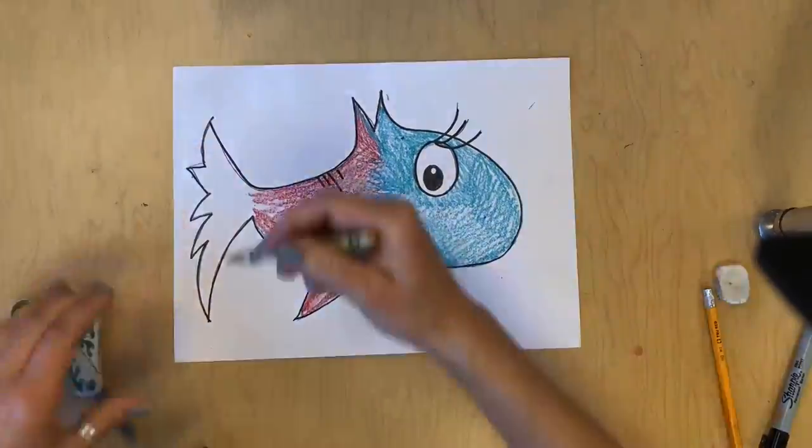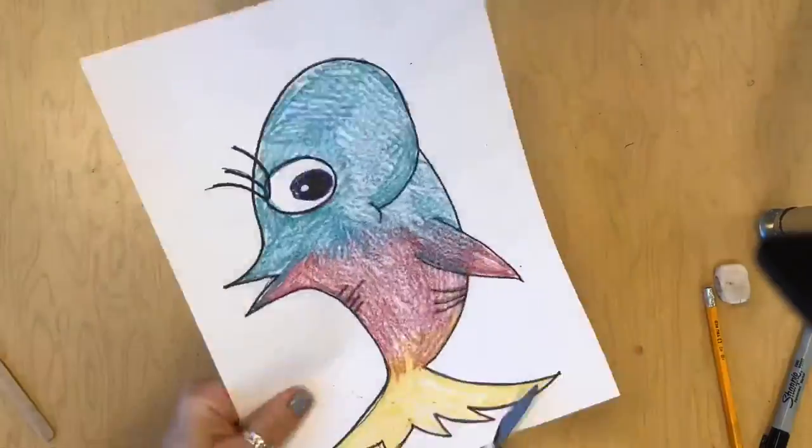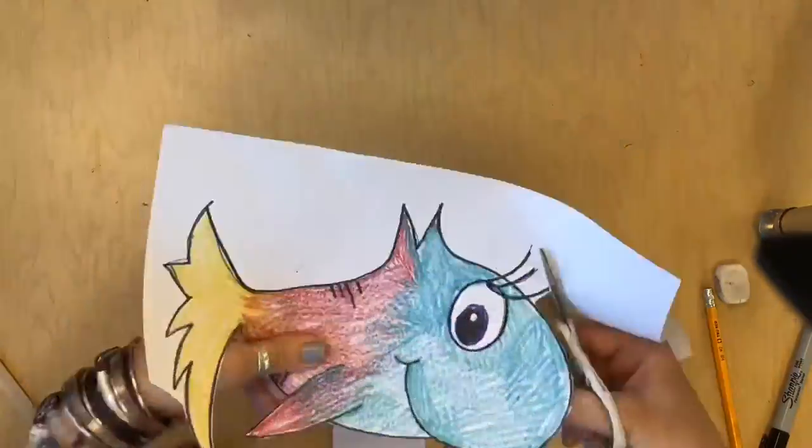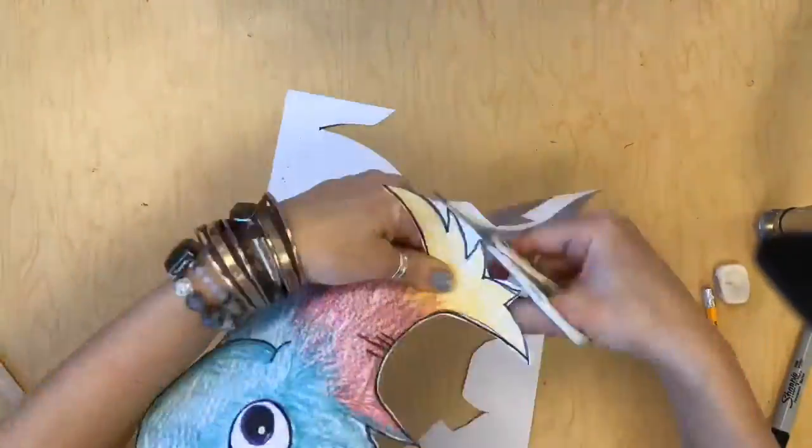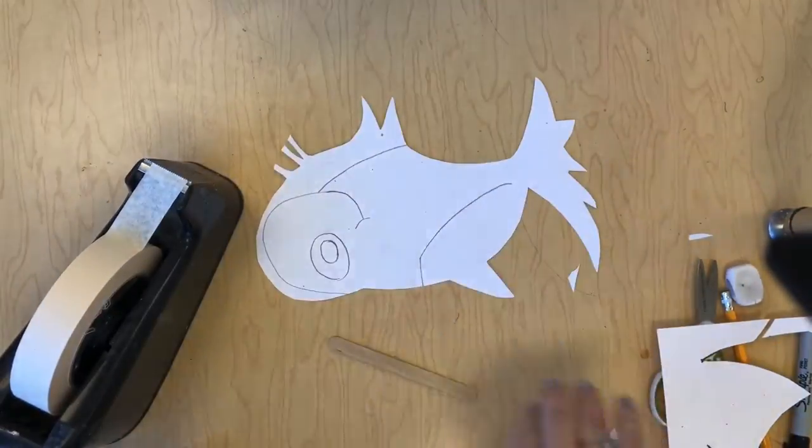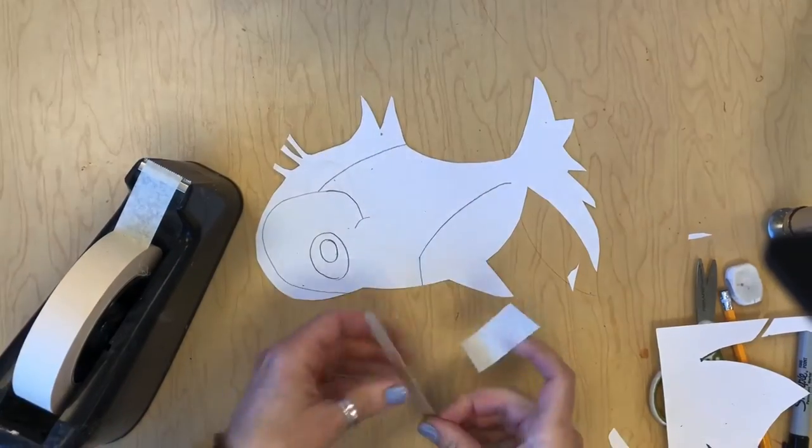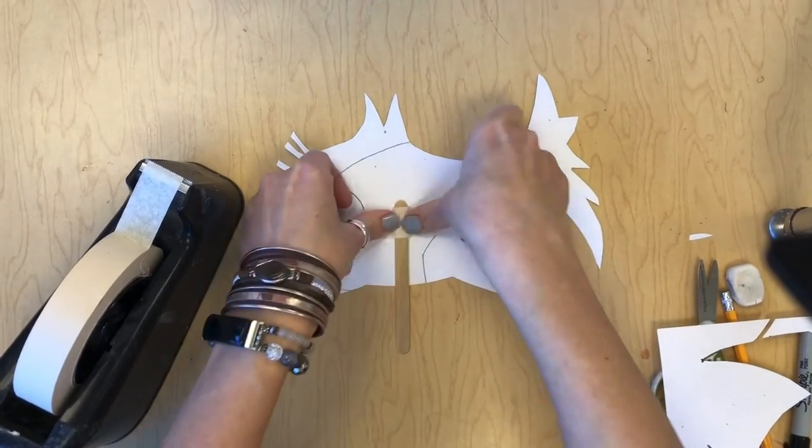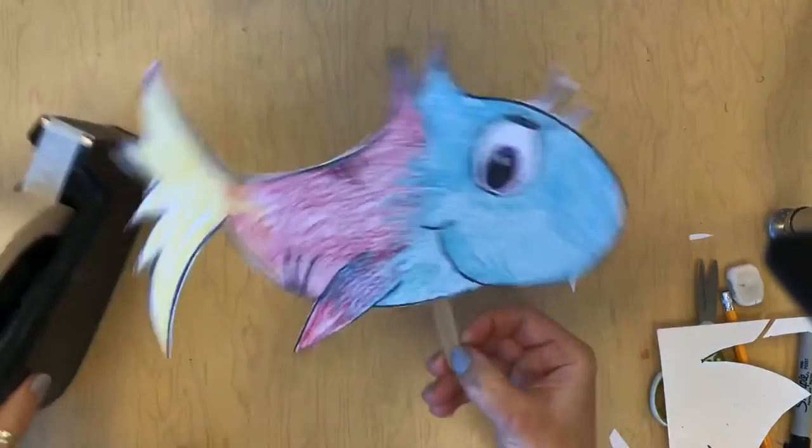And then finally I'm going to cut my fish out. Now that I'm done cutting out my fish, I'm going to flip it over and use a piece of tape to attach a popsicle stick to the back to turn it into a fun little puppet. And now my fish is all done.